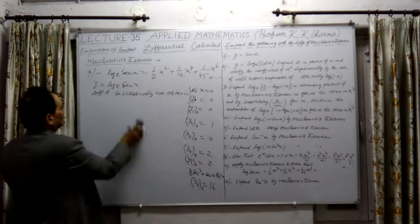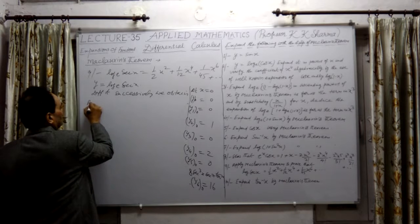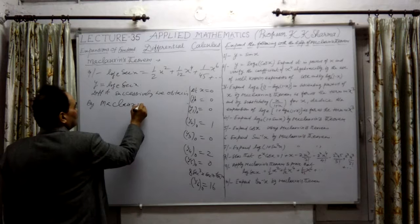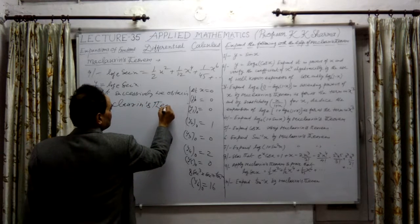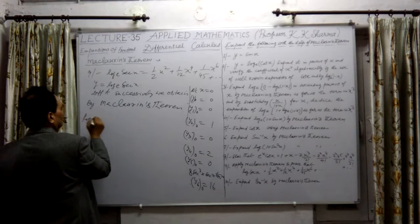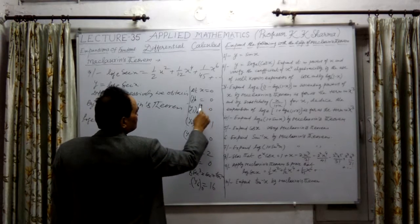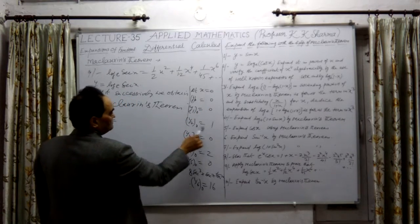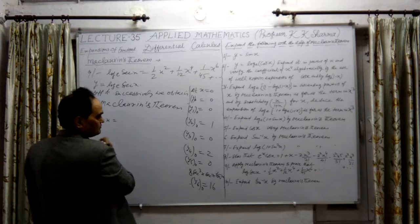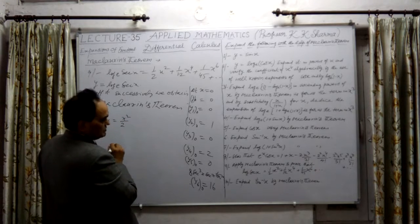Now let me write with the help of Maclaurin's theorem. By Maclaurin's theorem, the series obtained is: log e into 2nd x is equal to... now the first two terms are 0. This is divided by 1 only, by 2 is 1, that means x squared upon factorial 2, means 2 only.